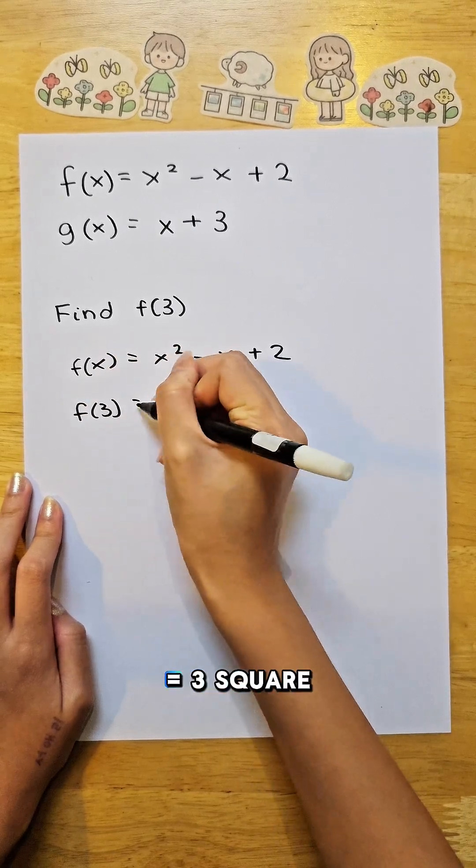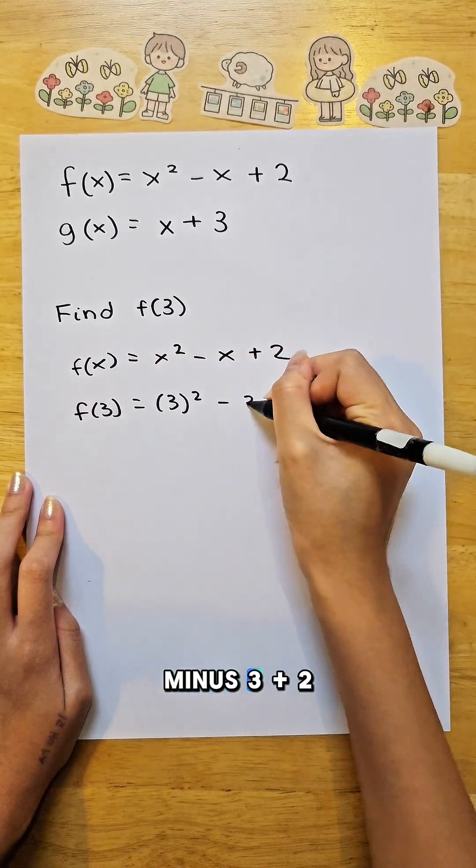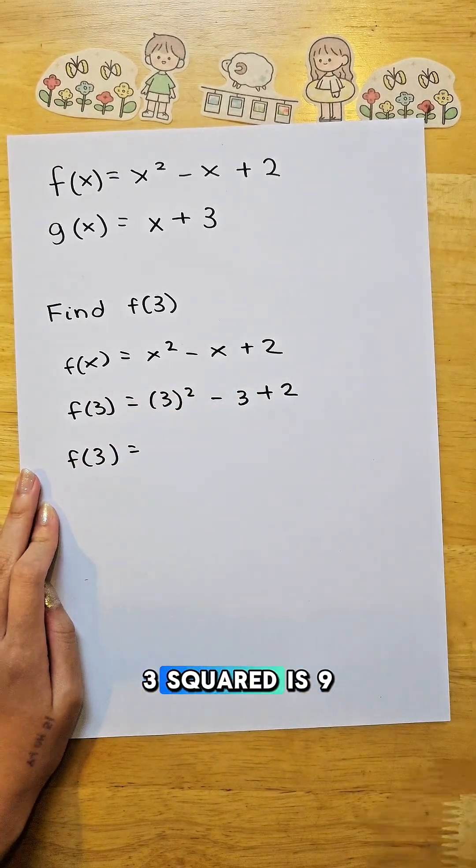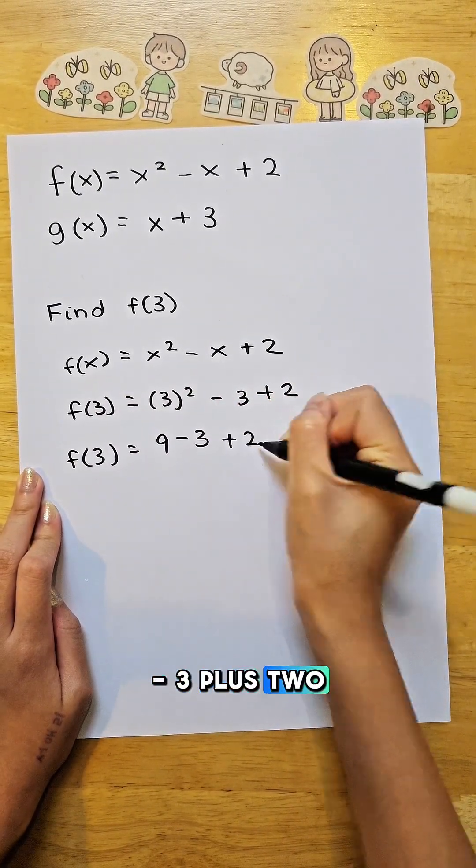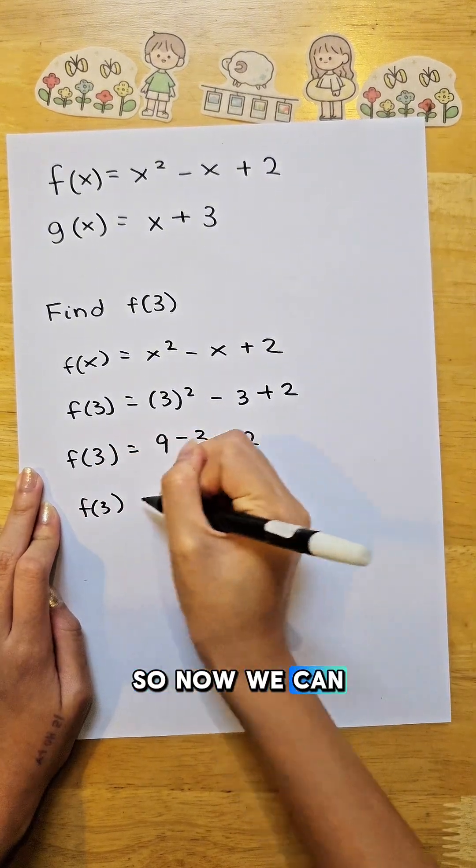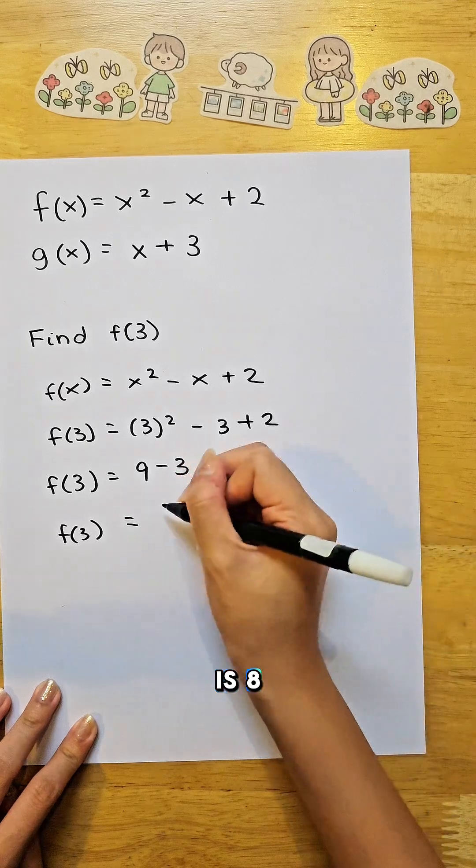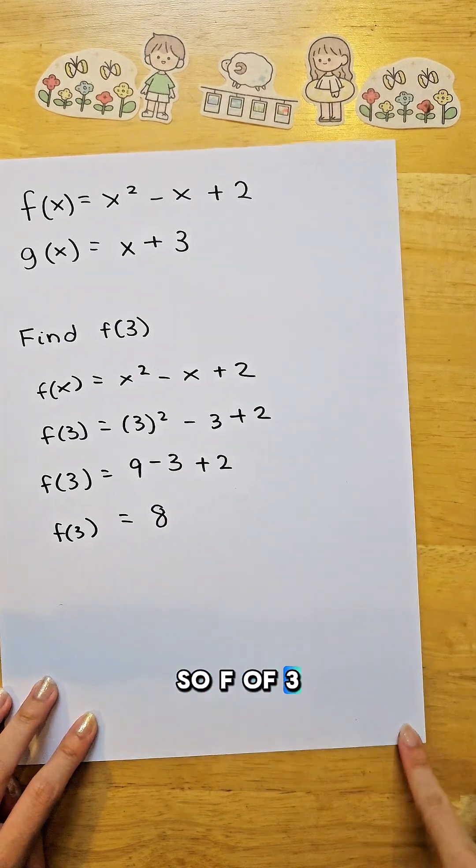Comes f of 3 equals 3 squared minus 3 plus 2. f of 3 equals 3 squared is 9 minus 3 plus 2. So now, we can solve this. 9 minus 3 and plus 2 is 8. So f of 3 is 8.